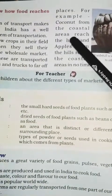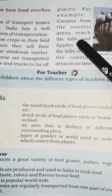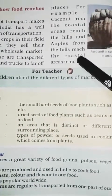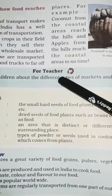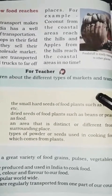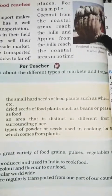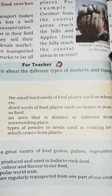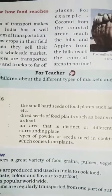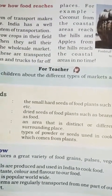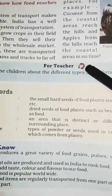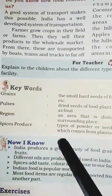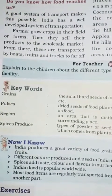For example, coconut from the coastal areas reaches the hills, and apples from the hills reach the coastal areas in very little time. Here, you can see a picture — food stuff is easily transported to other places. So children, read this lesson properly and learn these keywords. Thank you.